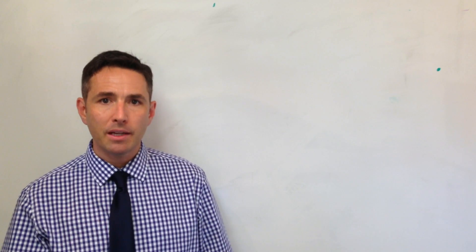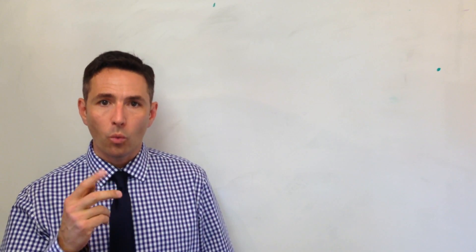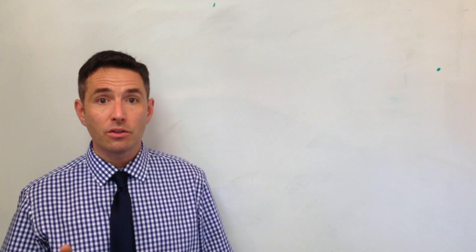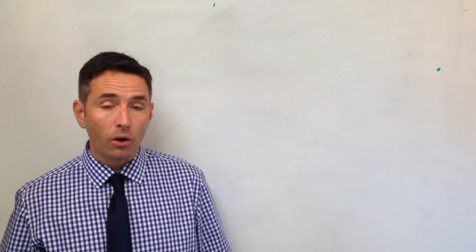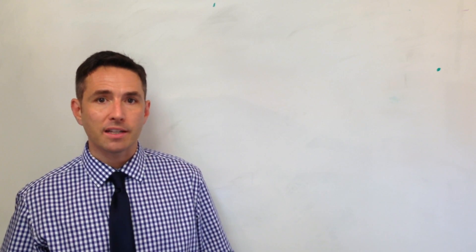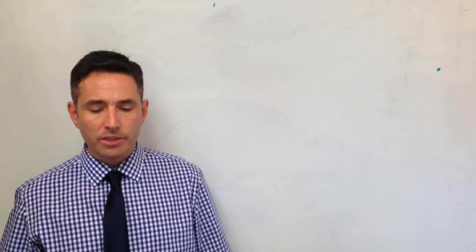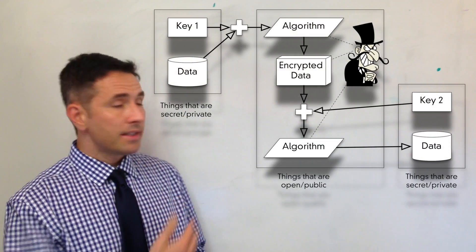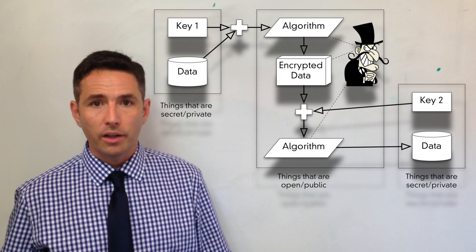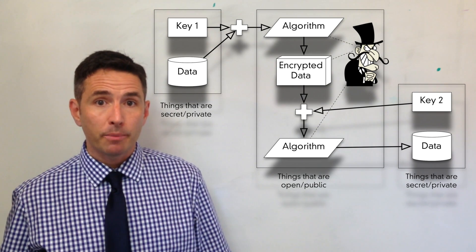Symmetric keys use the same key to encrypt and decrypt data. Asymmetric keys use one to encrypt and one to decrypt. It turns out you can use either key for either role — that's one of the features of asymmetric cryptography. So what this enables us to do is that Dr. Evil, sitting in the middle of the internet intercepting data, can't read our encrypted data.